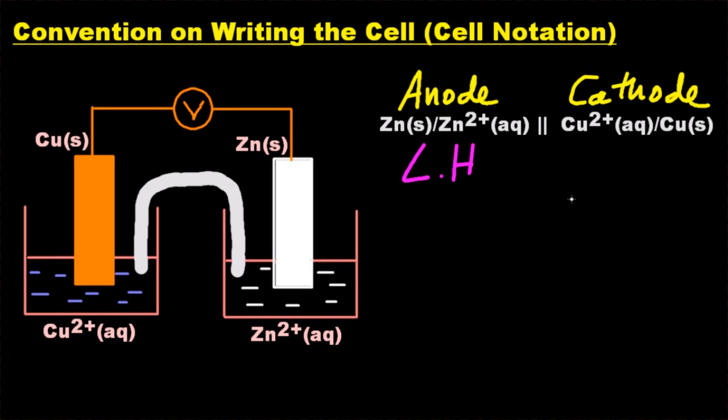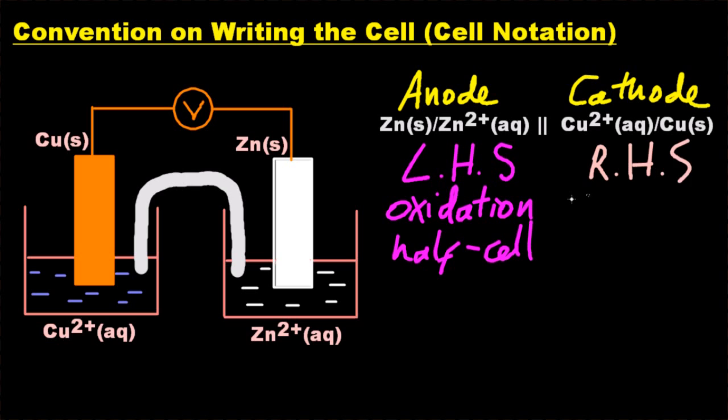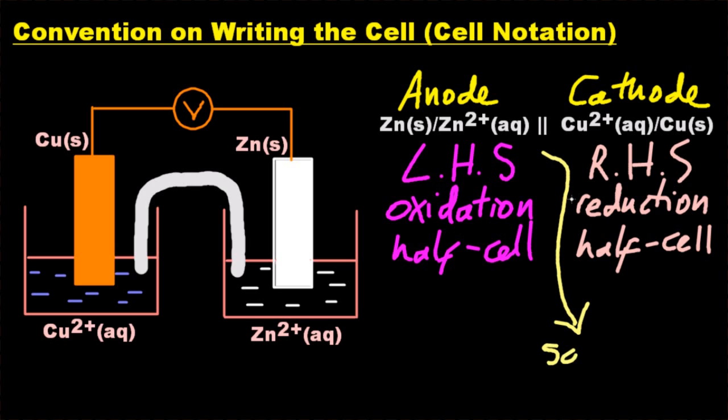the reduction half-cell. And the two vertical lines, well they're the salt bridge. Now since the salt bridge is dipping into the two aqueous solutions of electrolyte, they go closest to the salt bridge in this cell notation or convention for writing cells.